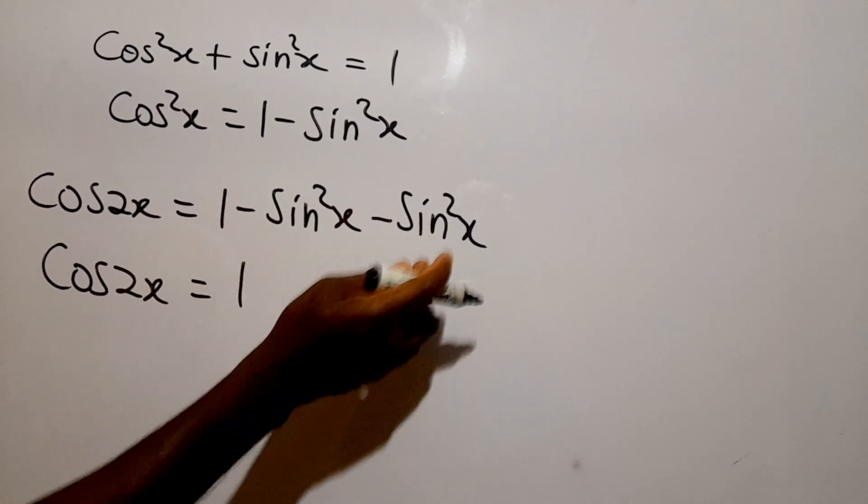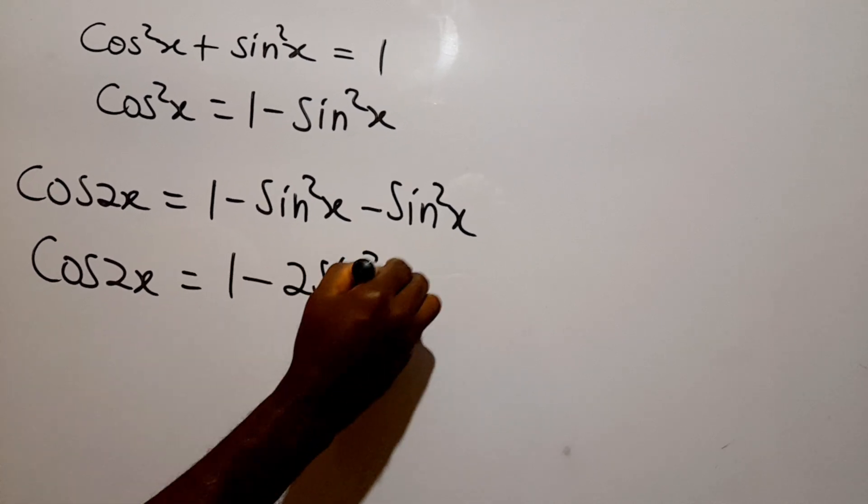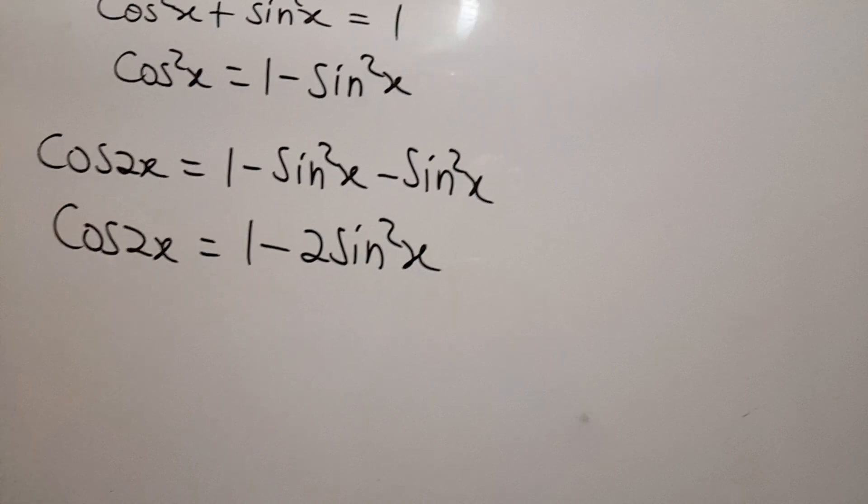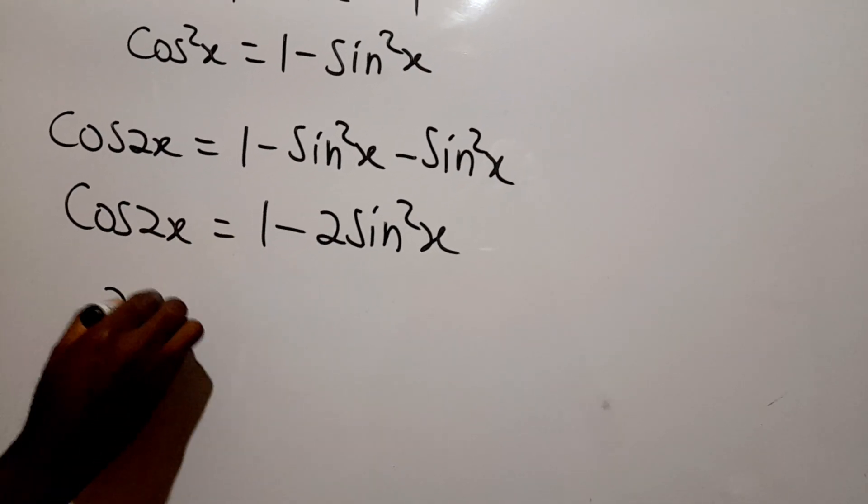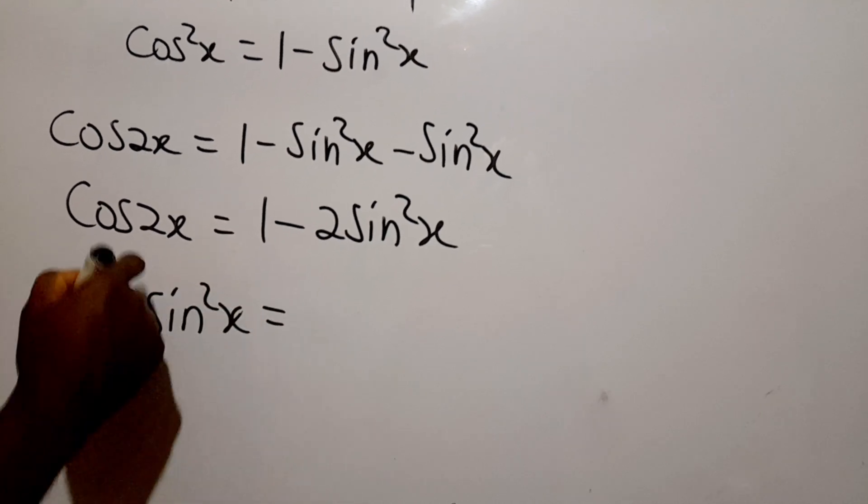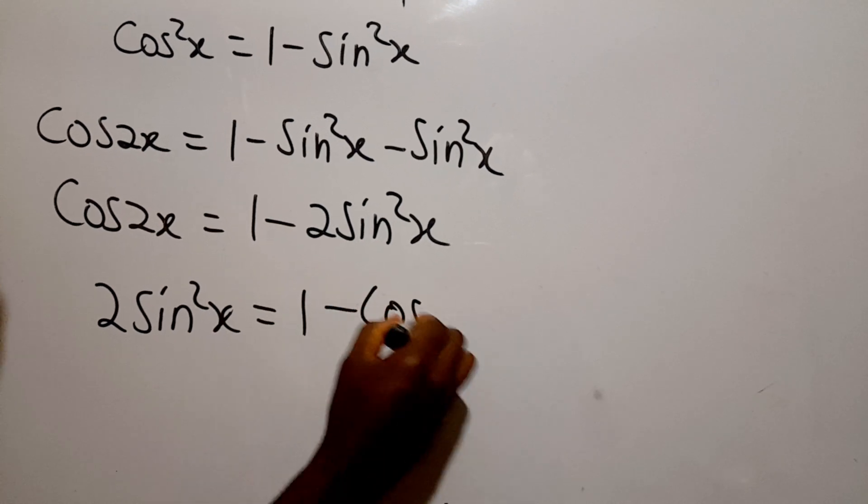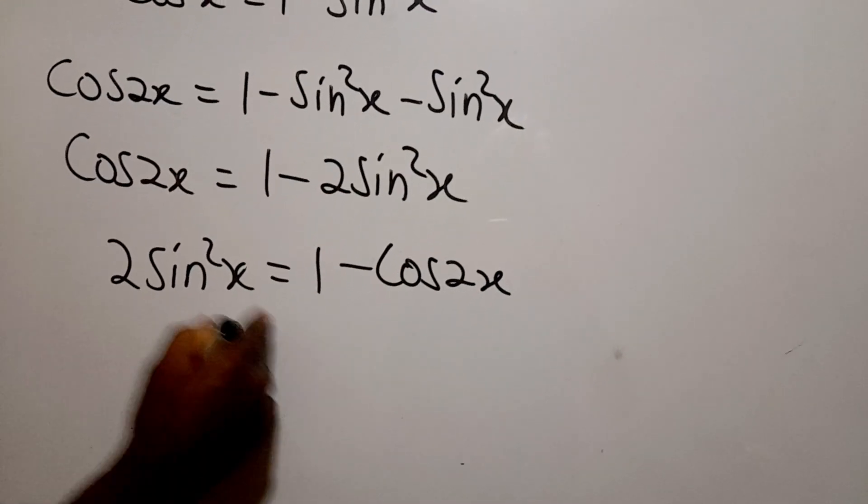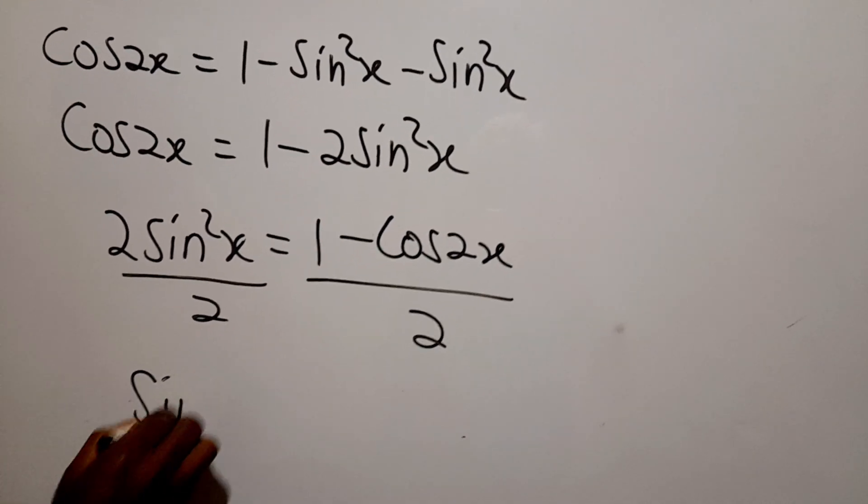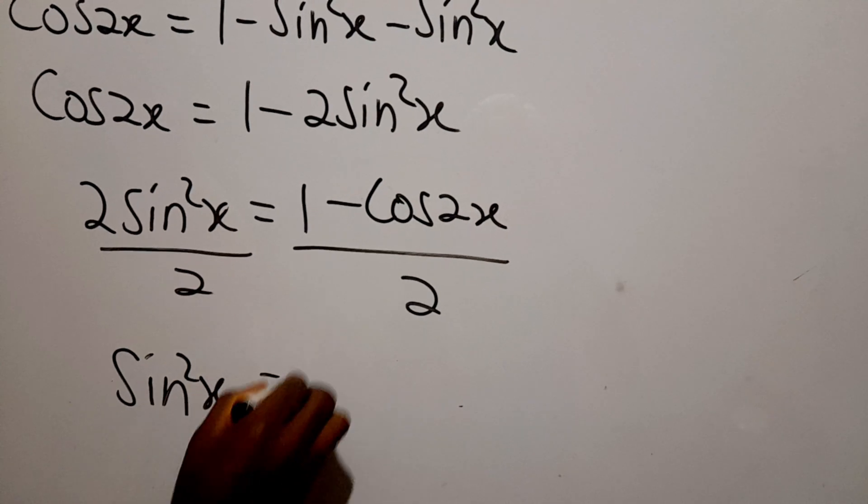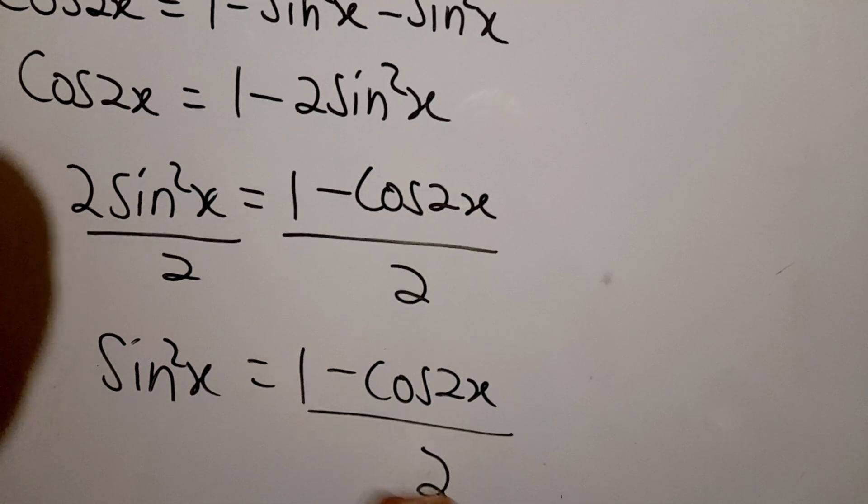So cos 2x will be one minus sine squared x minus sine squared x, which is minus two sine squared x. In making sine squared x the subject, we can say two sine squared x is equal to one minus cos 2x. So we divide both sides by two.